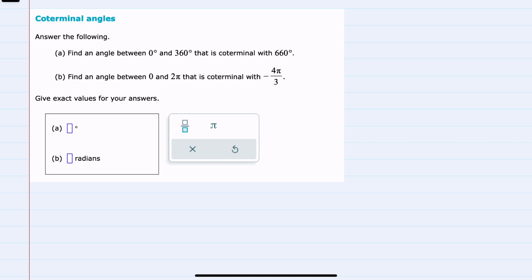In this example, we have two questions. Part A asks for a coterminal angle between 0 and 360 degrees, and Part B asks for a coterminal angle between 0 and 2π radians.